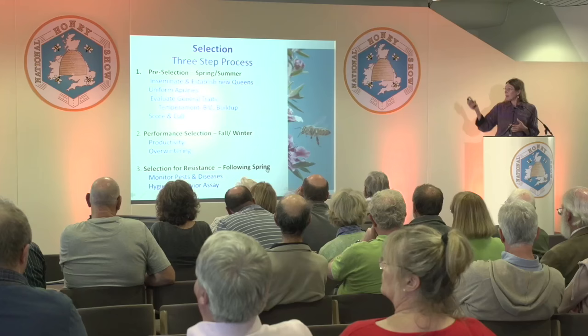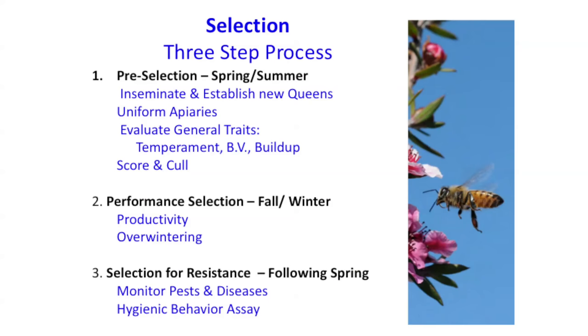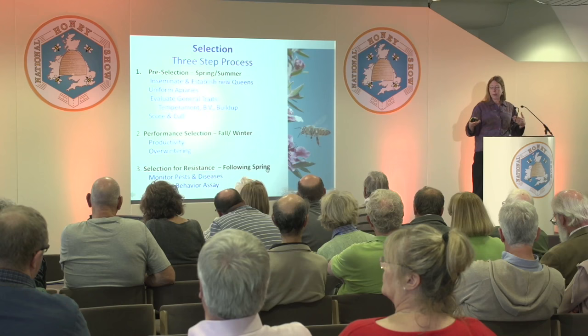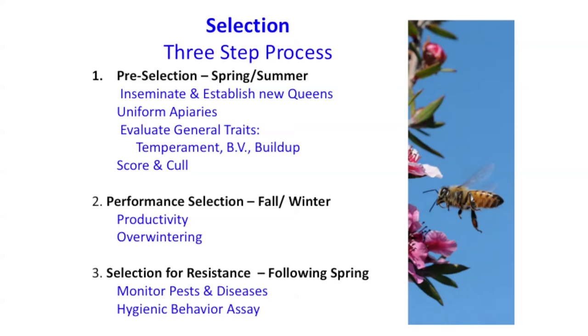I do what I call pre-selection. Once the queens are established, you go through and look for just general characteristics: uniformity, brood patterns, temperament, how they build up. Over time you can evaluate them for honey production on years you get a good flow. And then overwintering ability — wintering is probably the best selection tool. It just takes out the more susceptible. If they've got issues with nosema, tracheal mites, or whatever, they'll not survive the winter very well or they'll start dwindling down. You look for those behaviors.